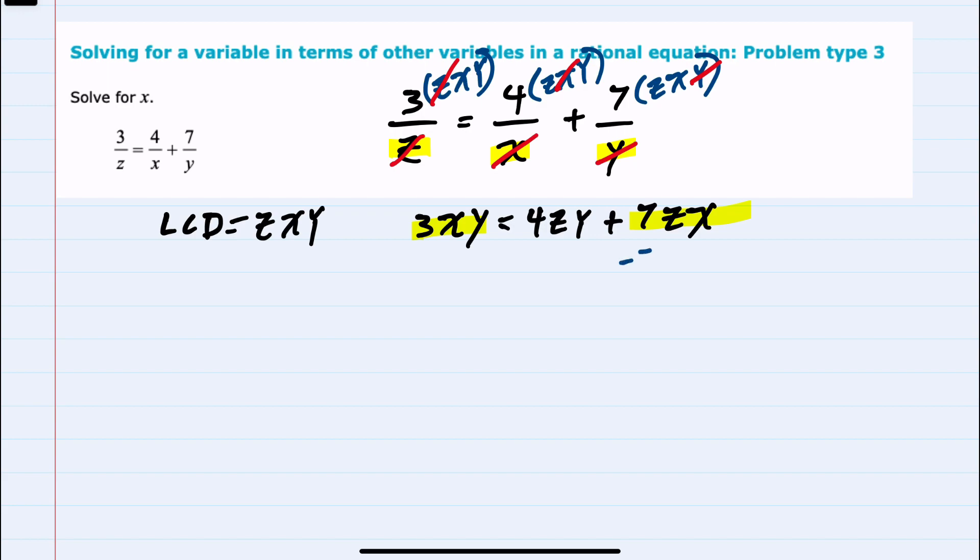So I will subtract the 7zx over to the left-hand side, giving me 3xy minus 7zx on the left. On the right-hand side, I now have just 4zy.